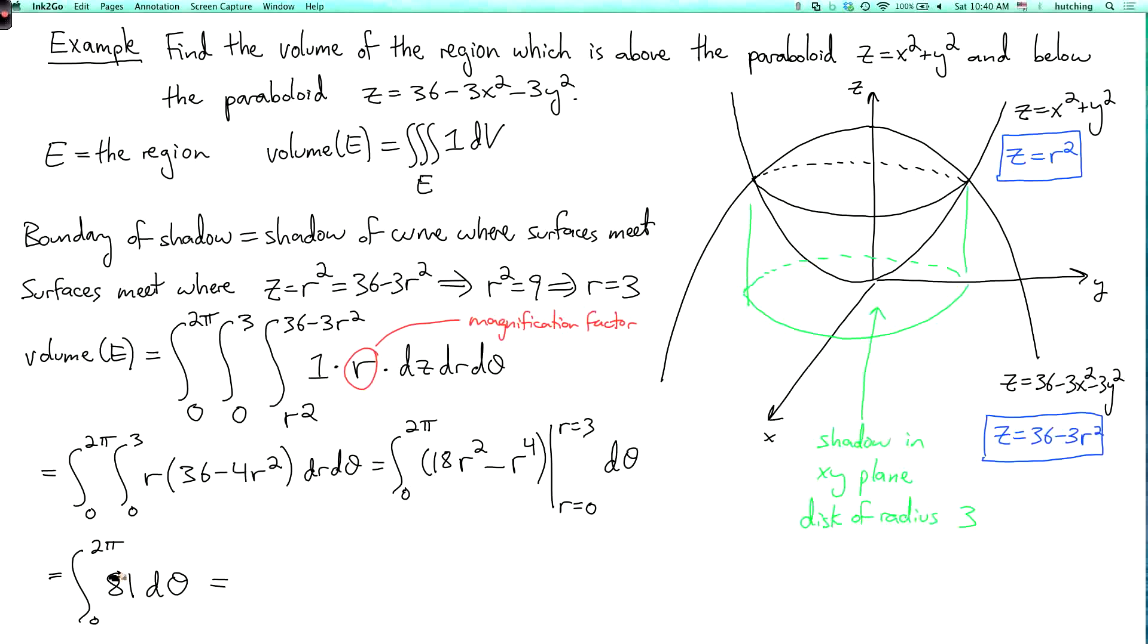And now since 81 is a constant to integrate over theta, I just multiply by 2π, so I get 162π.